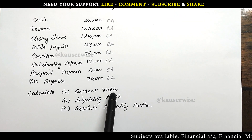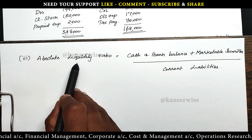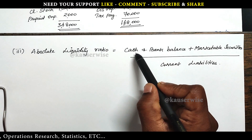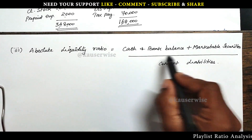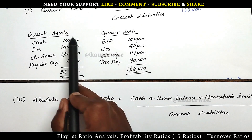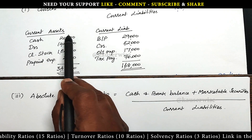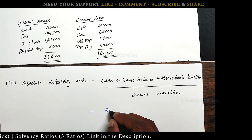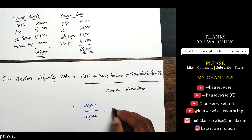So far we have calculated current ratio and liquidity ratio. Now we are going to calculate absolute liquidity ratio, otherwise called as super quick ratio or cash position ratio. The formula is cash in hand plus cash at bank plus marketable securities divided by current liabilities. In our problem we have only cash in hand — there is no bank balance or marketable securities. So: 20,000 divided by 1,68,000 equals 0.12 times.